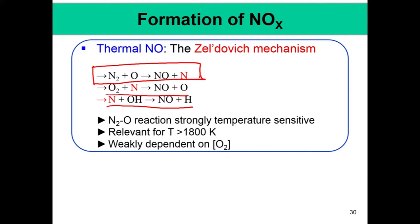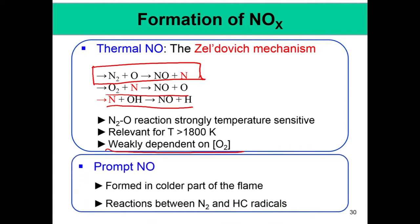As a result, this mechanism is important only at very high temperatures of 1800 Kelvin, and thermal NOx is mainly the NOx formed in the products. But then it was found that NOx is also formed in colder parts of the flame and does not always need high temperature to form, which led to the discovery of the prompt NOx mechanism by Fenimore.